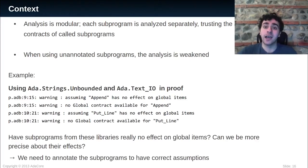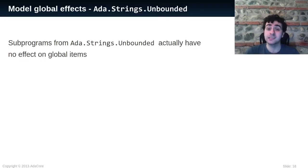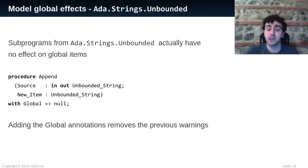Thus, we need to annotate the subprograms with correct global contracts, at least, so that Spark makes correct assumptions. Subprograms from Ada.Strings.Bounded have no effect on global items. We can add this contract to the subprograms with the aspect Global => null. When we do this, the warning emitted by Spark disappears.